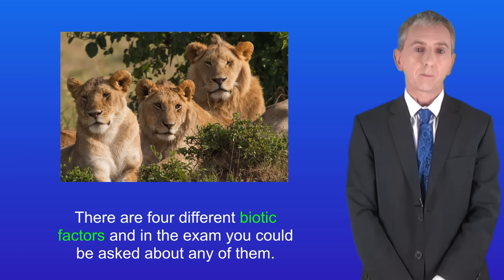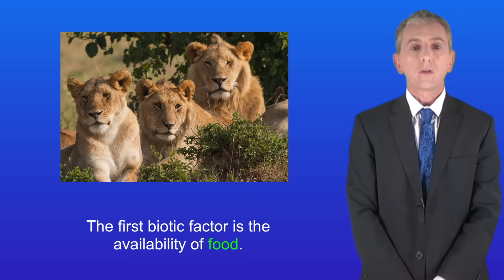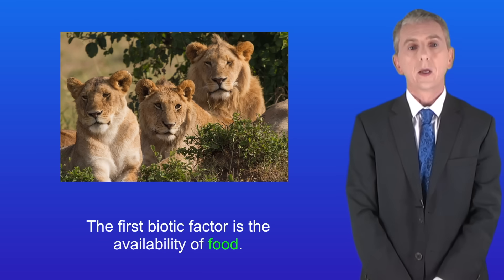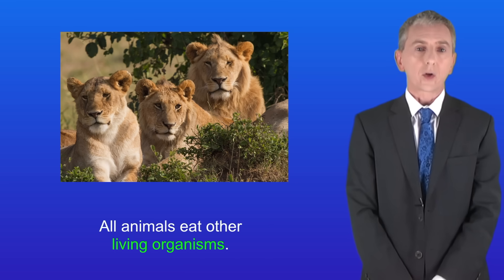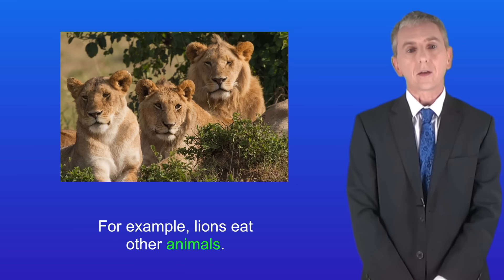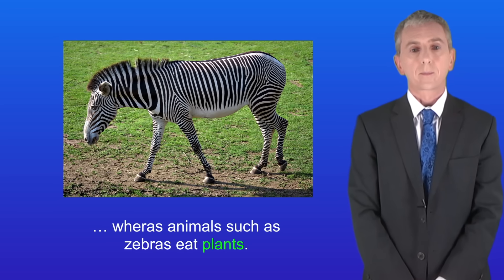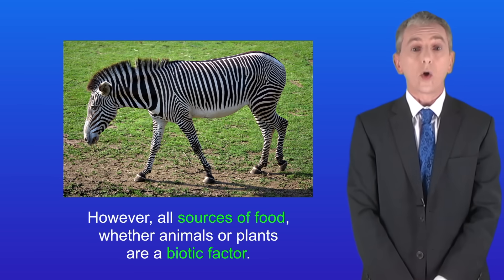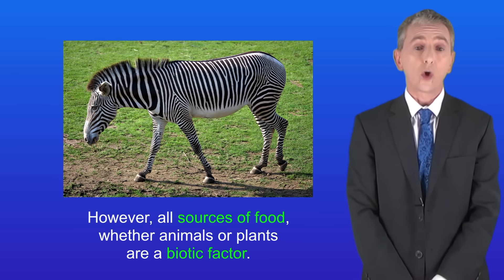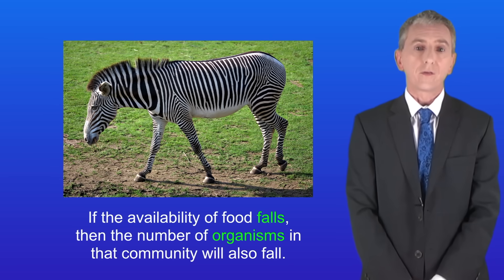There are four different biotic factors, and in the exam you could be asked about any of them. The first biotic factor is the availability of food. All animals eat other living organisms — for example, lions eat other animals, whereas animals such as zebras eat plants. However, all sources of food, whether animals or plants, are a biotic factor, and if the availability of food falls, then the number of organisms in that community will also fall.